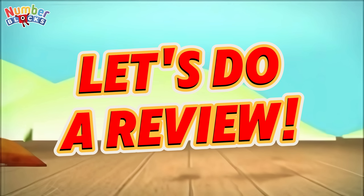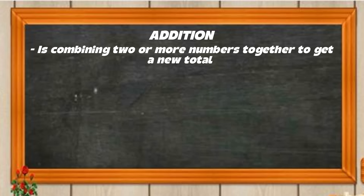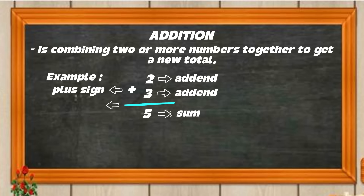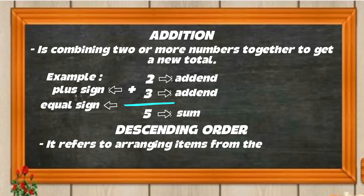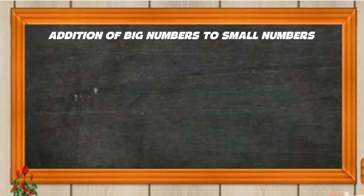Let's do a review. What is addition? Addition is combining two or more numbers together to get a new total. Example: 2 plus 3 is equals to 5. We're in 2 and 3 are the addends and 5 is the sum. Here is the plus sign and here is the equal sign. Let's define descending order. It refers to arranging items from the largest or the highest value to the smallest or lowest value.